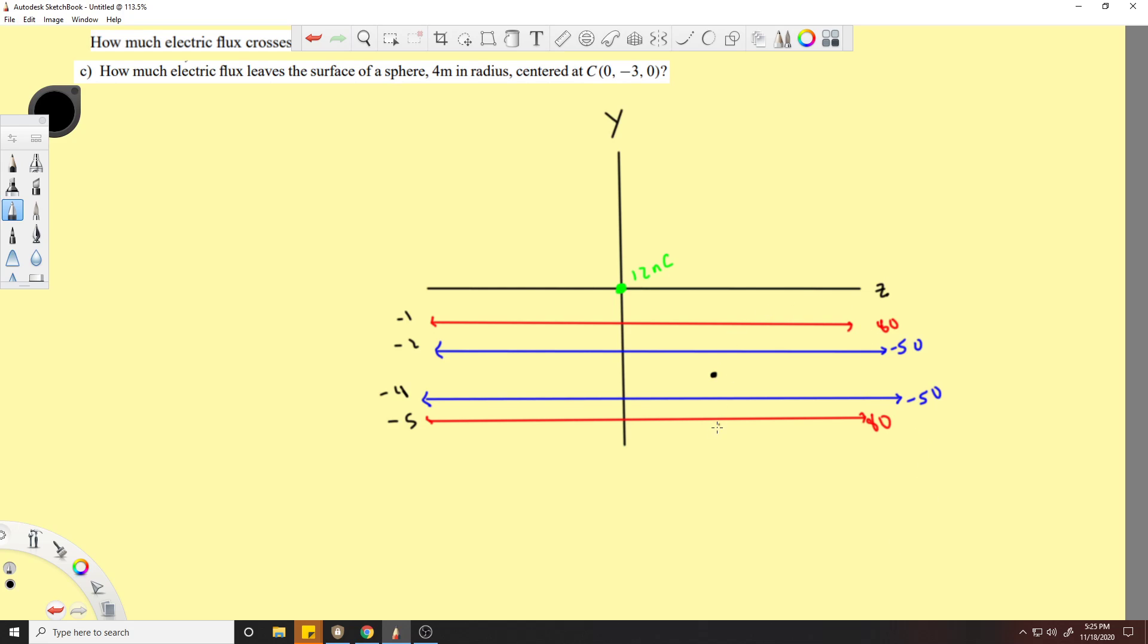They're both 80 nanocoulombs per meter. Because of that we know that in the y direction we will have canceling values because this line will cancel that line and this blue line will cancel the other blue line. So we know the y direction is nada.